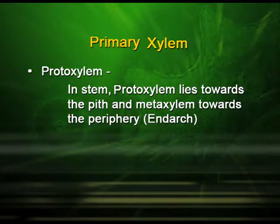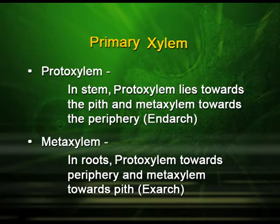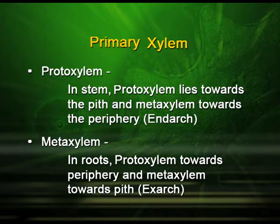The first-formed xylem is generally referred to as primary xylem. In the stem, the protoxylem lies towards the pith and the metaxylem lies towards the periphery — such a condition is known as endarch. In roots, the protoxylem is found towards the periphery and the metaxylem towards the pith — such a condition is known as exarch.